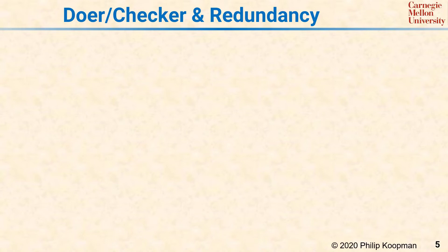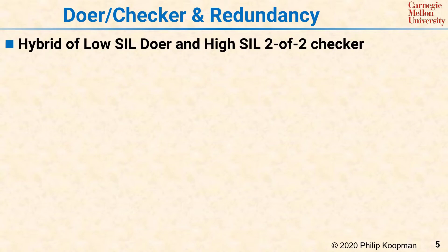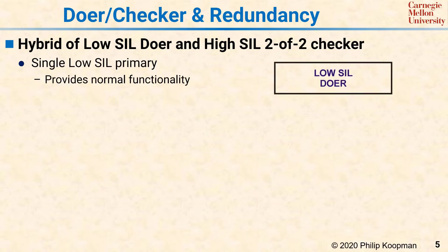Another redundancy mechanism is the doer-checker approach, sometimes called a monitor-actuator pair. An example of this approach is a combination of a low-SIL doer and a high-SIL checker. The low-SIL doer is in charge of doing the normal system operation. However, it might end up doing something unsafe, so the system is designed to fail silent by having a checker shut down the whole thing if the doer misbehaves.